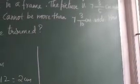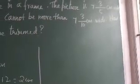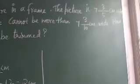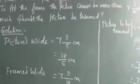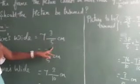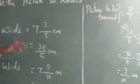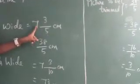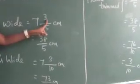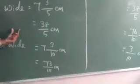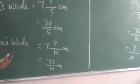To solve this, first convert the mixed fractions to improper fractions. The picture's width is 7 and 3/5 centimeters. Convert to improper fraction: 5 sevens are 35, and 35 plus 3 is 38. So the picture's width is 38/5 centimeters.